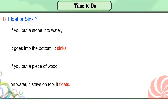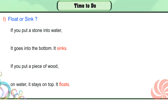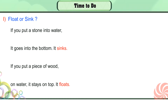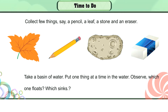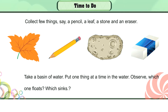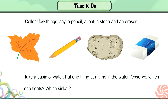Float or Sink activity. 1. If you put a stone into water, it goes to the bottom — it sinks. 2. If you put a piece of wood on water, it stays on top — it floats. 3. Collect a few things: a pencil, a leaf, a stone, and an eraser. Take a basin of water. Put one thing at a time in the water and observe which one floats and which sinks.